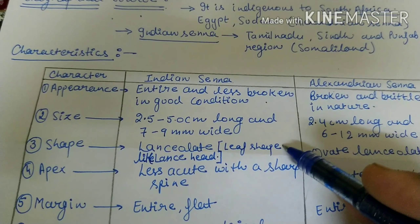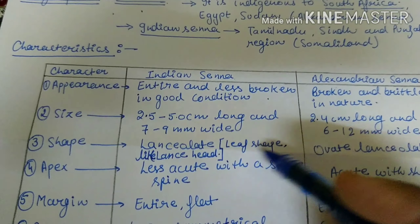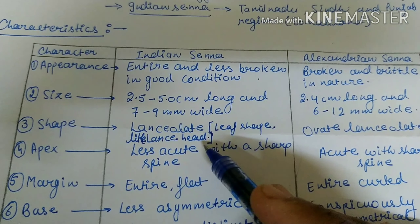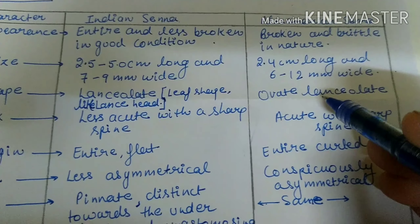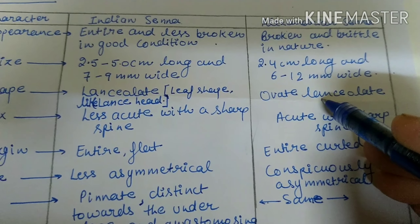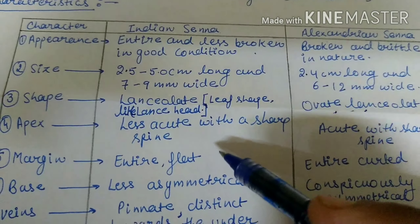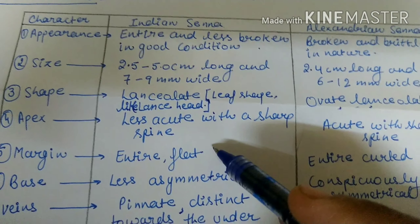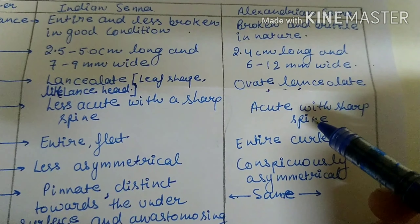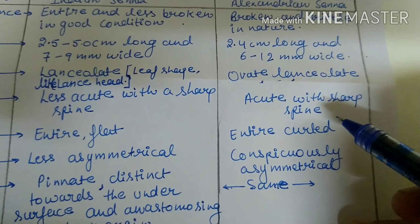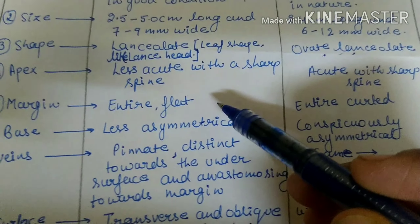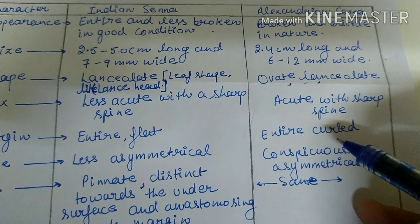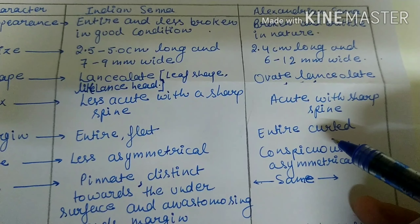Regarding shape, Indian Senna is lanceolate — meaning a leaf shape like a lance head — while Alexandrian Senna is ovate lanceolate. The apex of Indian Senna is less acute with a sharp spine, while Alexandrian Senna is acute with a sharp spine. The margin of Indian Senna is entire and flat, and the margin of Alexandrian Senna is entire and curled.